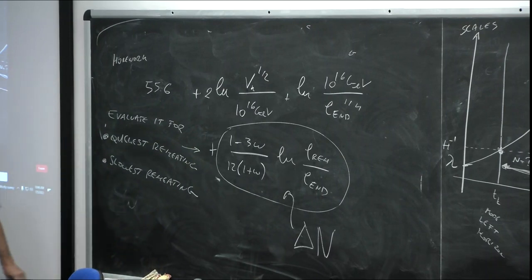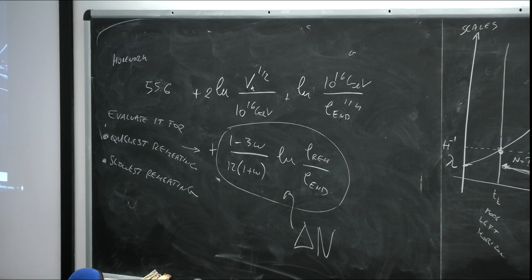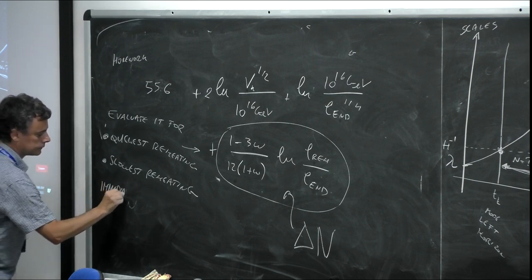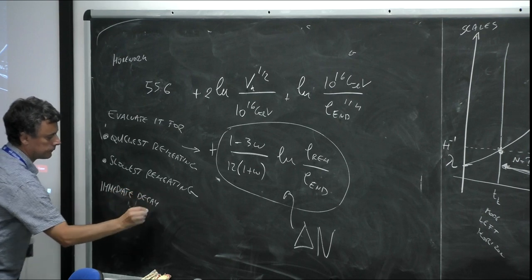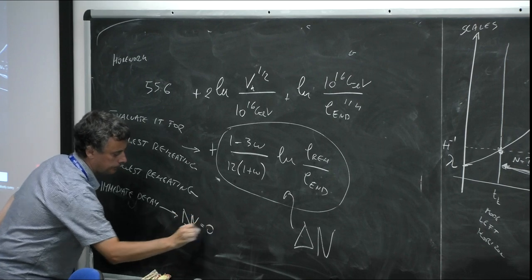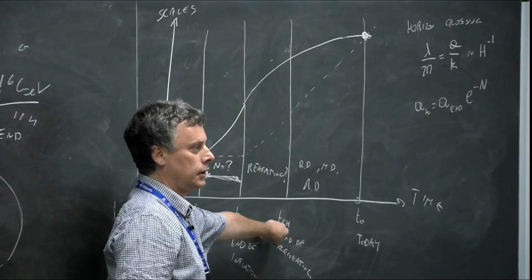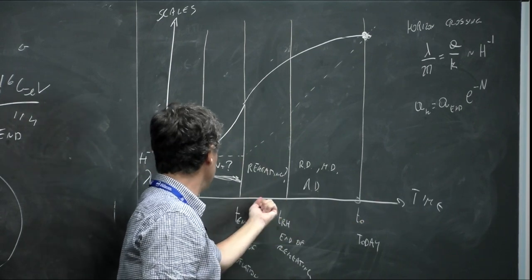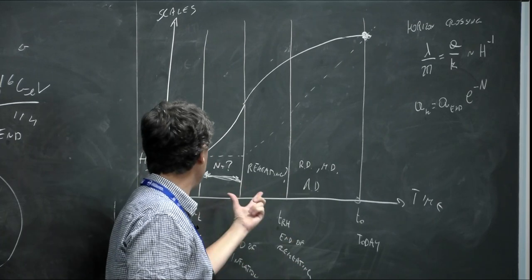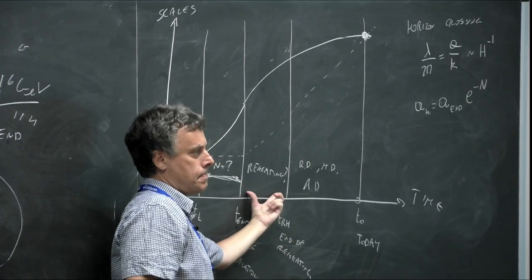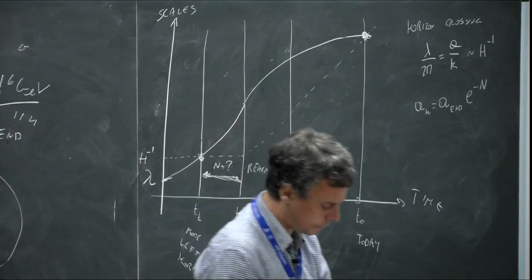The quickest possible scenario: the inflaton decays immediately. Therefore ρ_end = ρ_reh and this term equals zero. If the inflaton decays immediately, ΔN = 0. The immediate reheating means this time coincides with the end-of-inflation time, and therefore there is no extra accumulation of e-folds during this period.